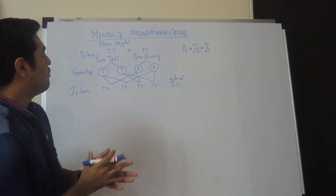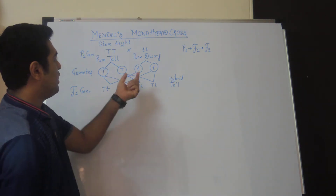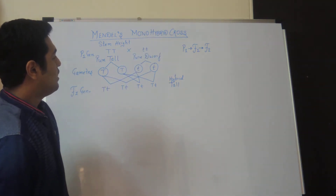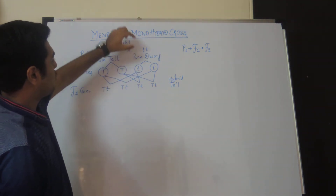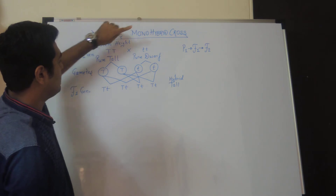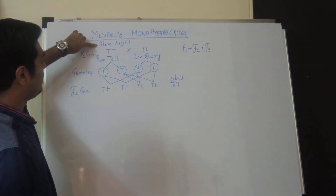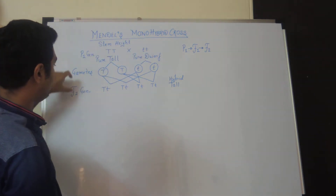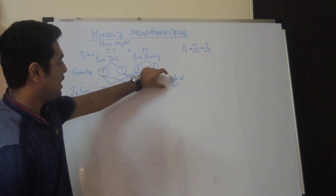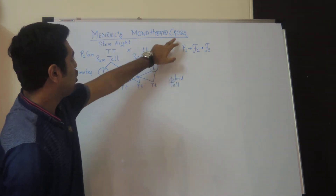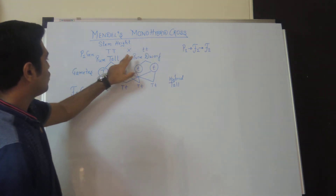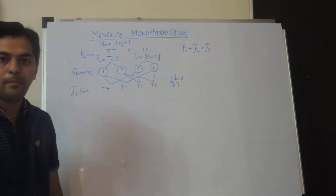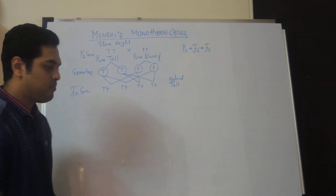Since all offspring of the F1 generation were hybrid, this experiment is known as monohybrid cross. We have now decoded the entire meaning of the title: 'mono' meaning single pair of contrasting traits, 'hybrid' since all offspring are hybrid in nature, and 'cross' meaning cross-pollination performed between the parental plants.